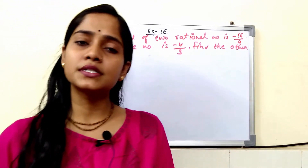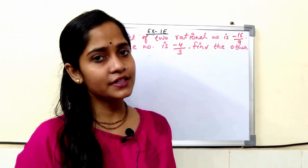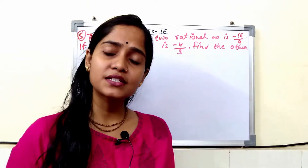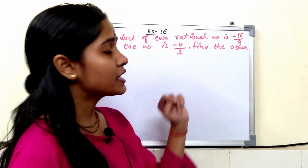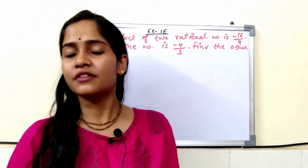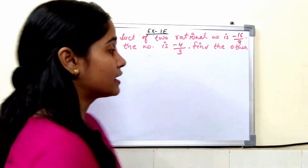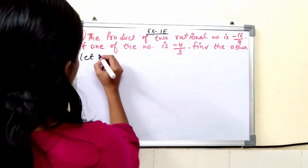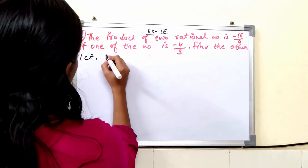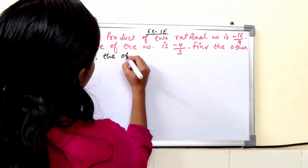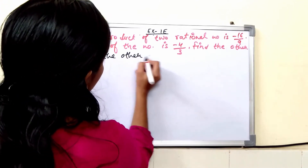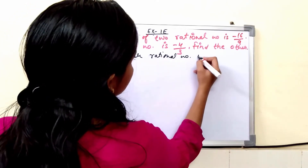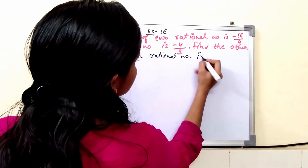Here you have two rational numbers whose product is given: minus 16 upon 9. One rational number is given as minus 4 upon 3. You have to find the other number. Let the other rational number be x.